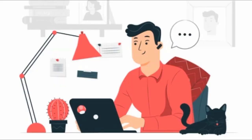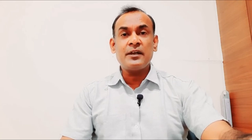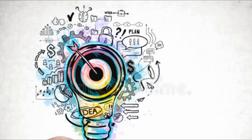Consider your goal in quantifiable terms and determine what actions you need to get there. For the specific criteria, instead of 'I want to get better at writing or typing,' the specific version is 'I want to increase my typing speed.' This takes a broad statement — like learning proper typing techniques or not looking at the keyboard — and makes it more specific by evaluating which aspect of typing can be set as a goal.